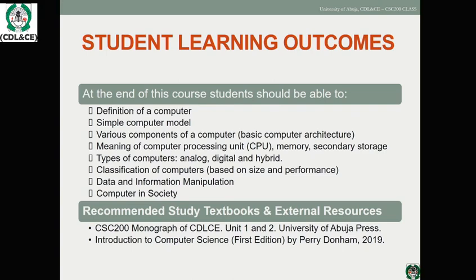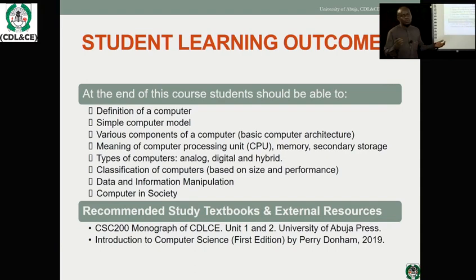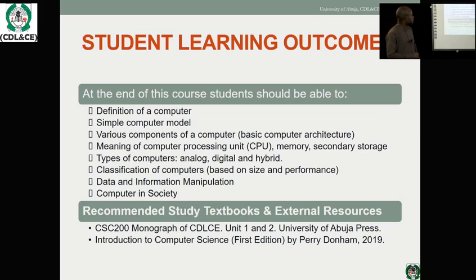The course outline is shown on the slide. We go through the definition of the computer, the simple computer model, and the basic functional components of the computer system. The computer system, being an electronic device, is divided into several components: input components, output components, and processing components. We also look at the types of computer based on the kind of data they process, based on their size, and based on the purpose of their usage.